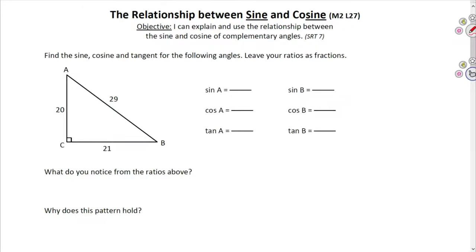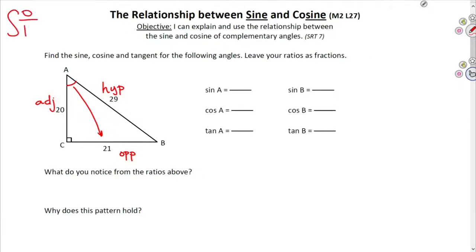We have a right triangle here with all three lengths given. I'm going to find the sine, cosine, and tangent for angle A. For this right triangle, 29 is the hypotenuse. Looking at angle A, 20 is the leg adjacent to angle A — this is the adjacent. And 21 is on the opposite side from angle A — this is the opposite. We can use our mnemonic SOHCAHTOA. The sine is the opposite over the hypotenuse, or 21 over 29.